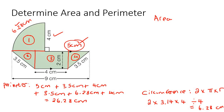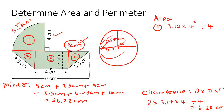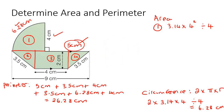Let's begin with the quarter circle. A circle has an area of pi multiplied by the radius squared. So for that first quarter circle, we get 3.14 × 4² and then divide by 4, because we only have a quarter of the circle — we don't have the full area. That gives you 12.56 centimeters squared.